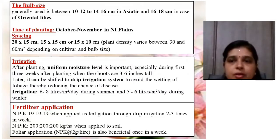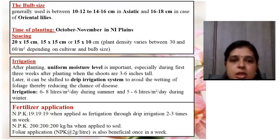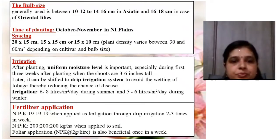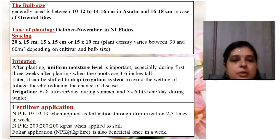After planting, uniform moisture is necessary. The irrigation system is then shifted to drip irrigation to avoid wetting of foliage and reduce disease incidence. For fertilizer application through drip irrigation, NPK 19:19:19 solution at 200 ppm is given two to three times per week. A total of 200 kg per hectare each of nitrogen, phosphorus, and potassium is required.